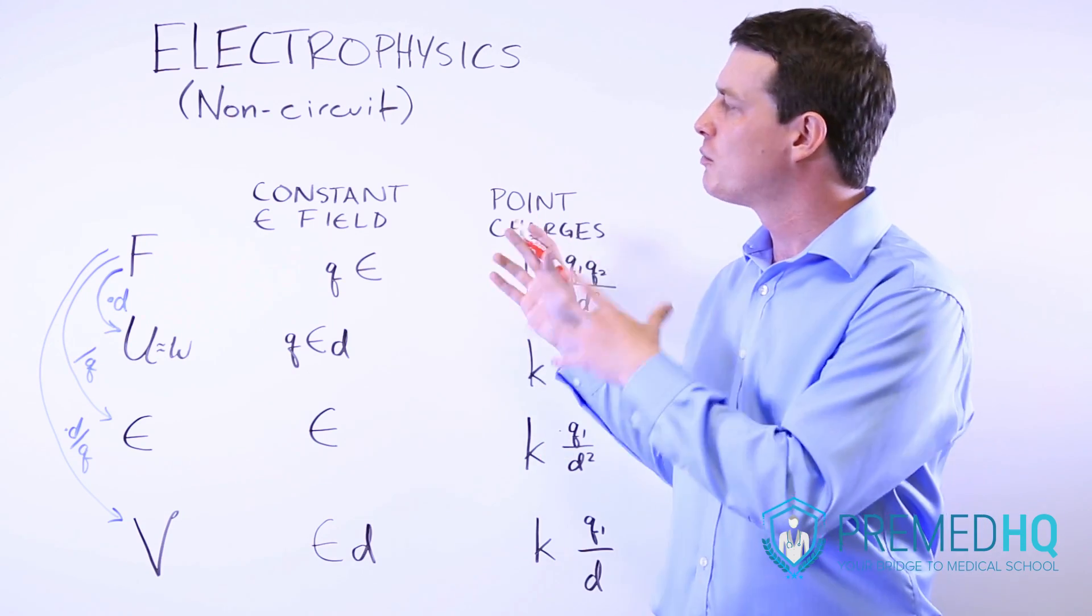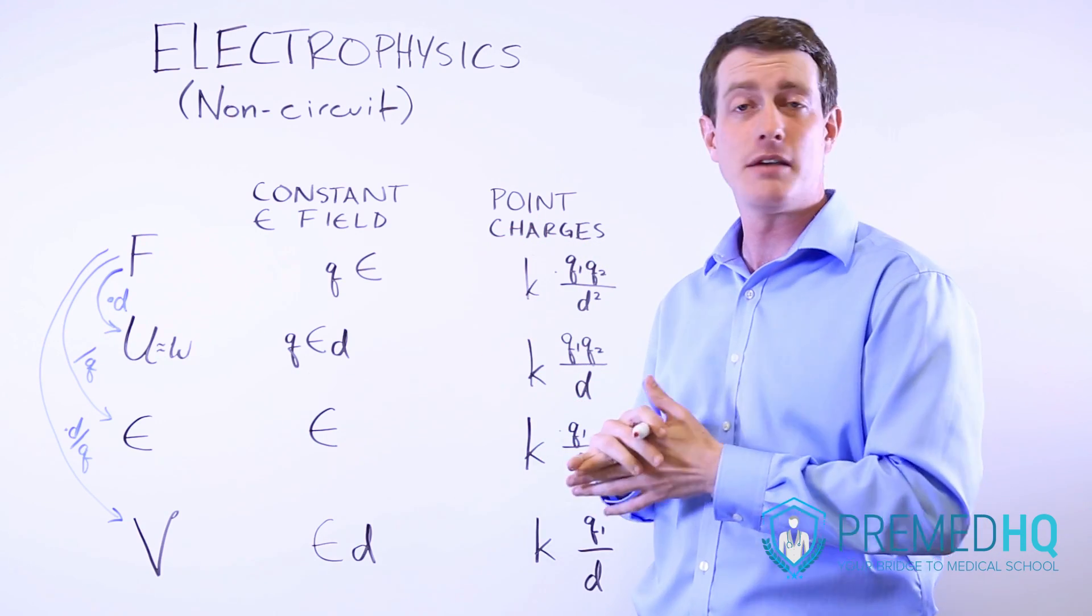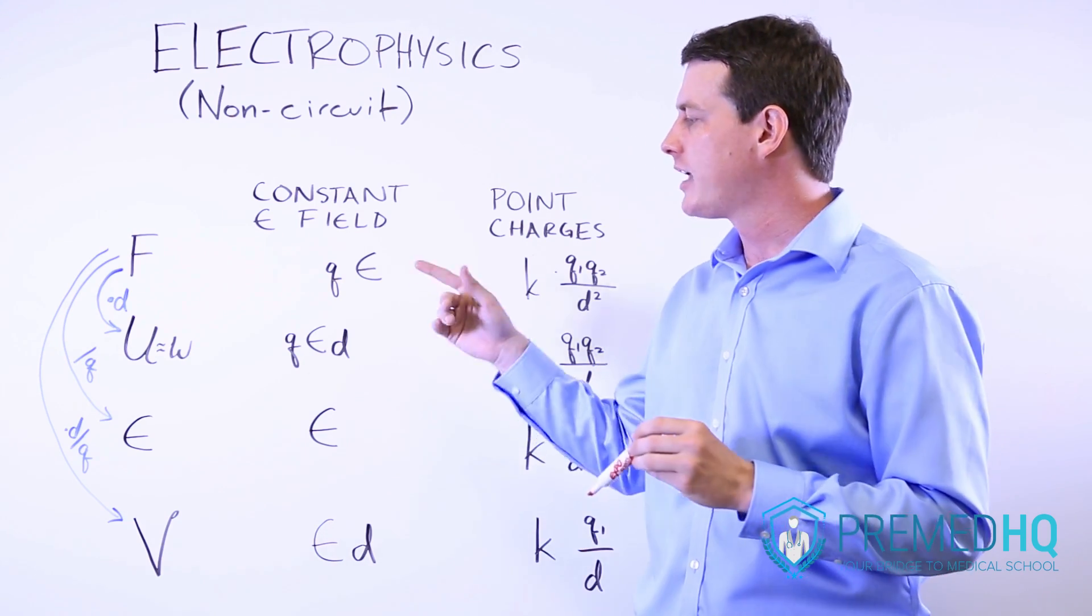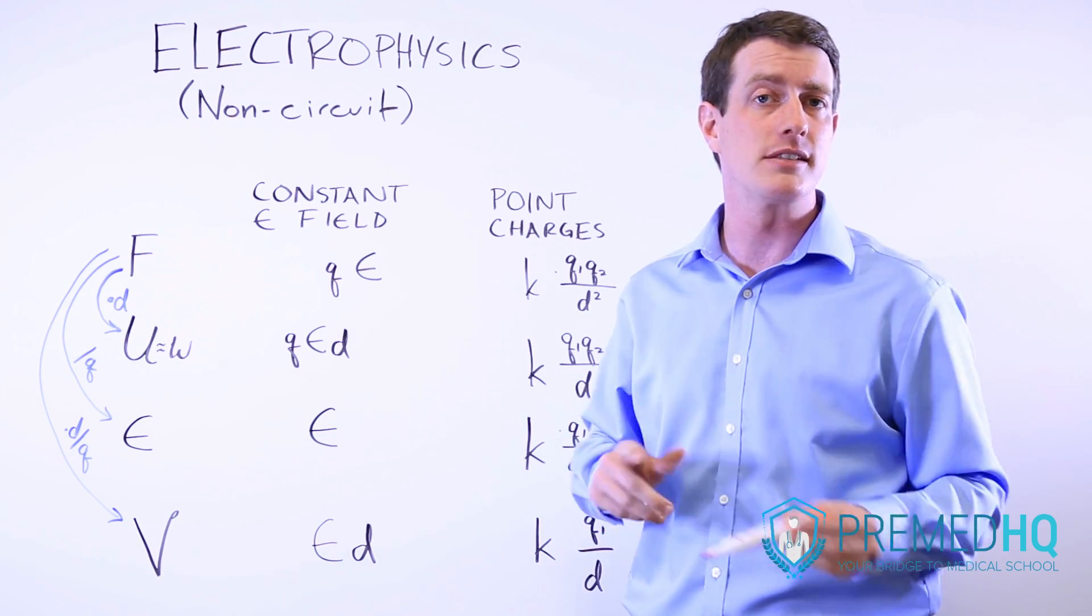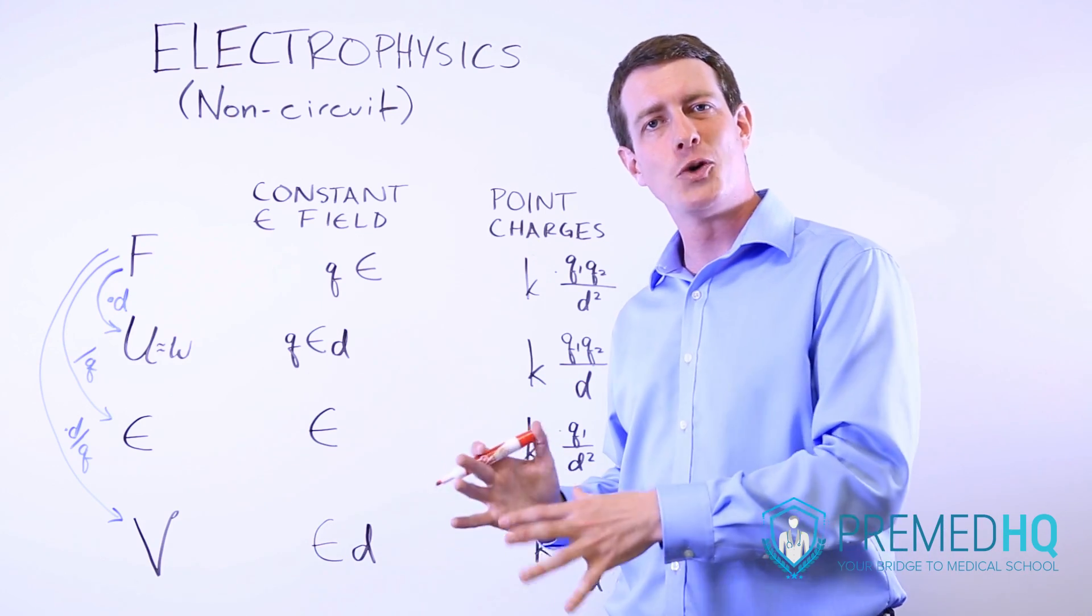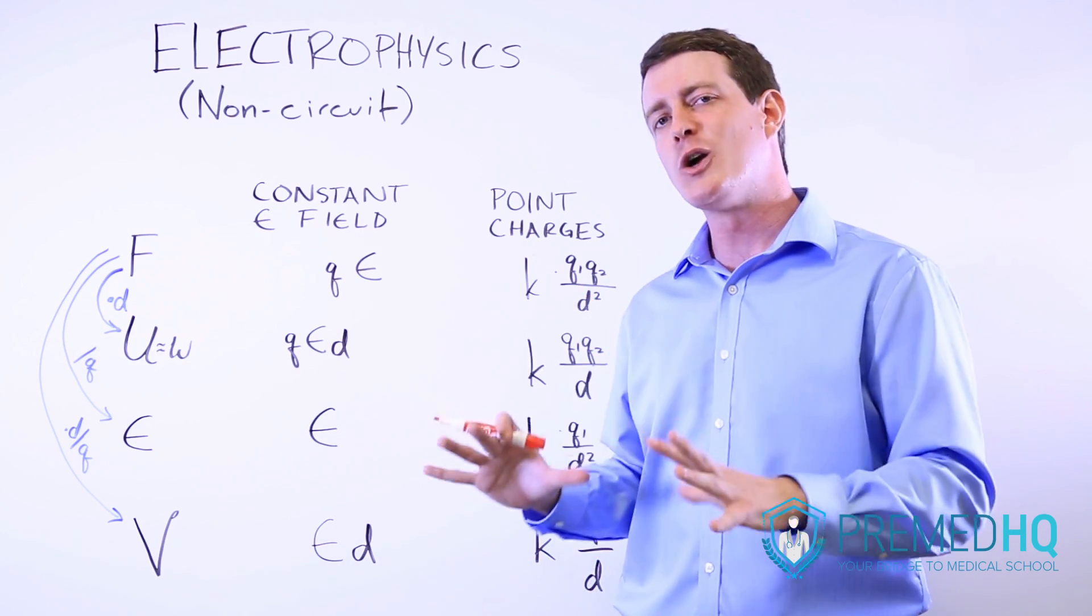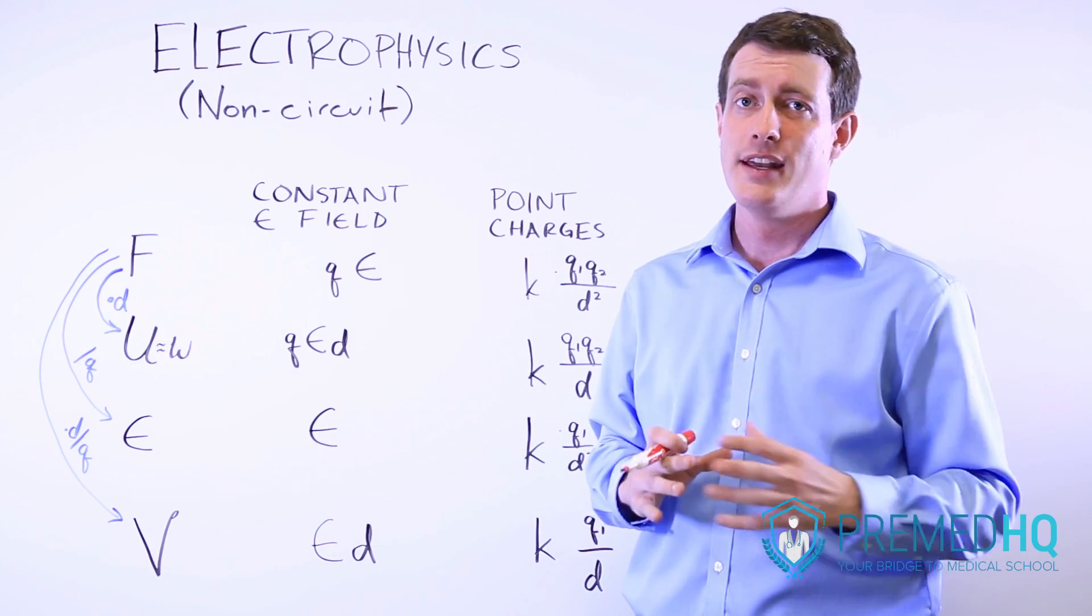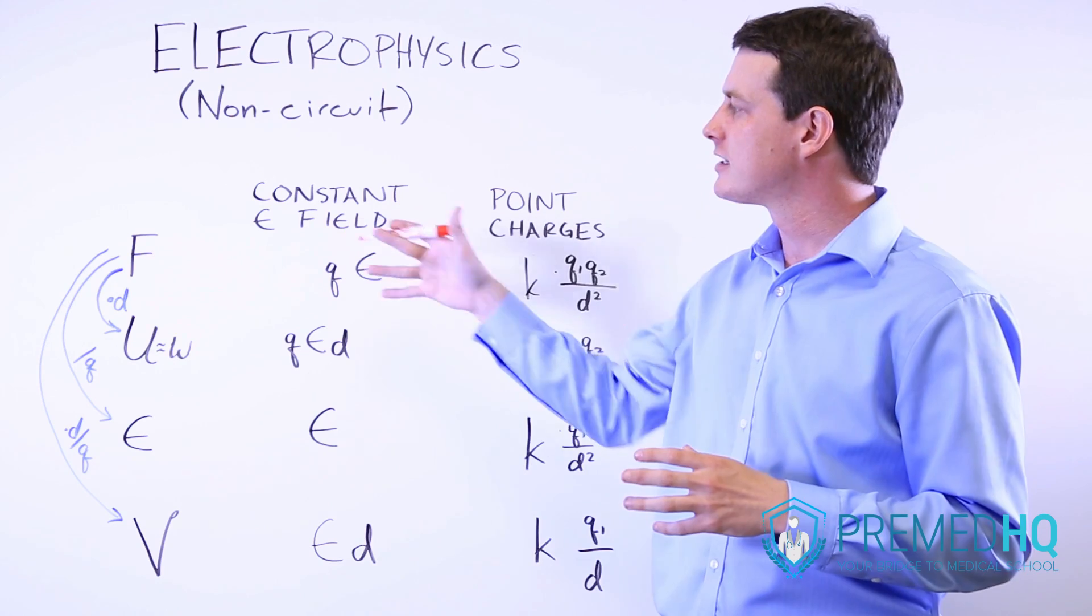The code words for constant electrical field: they might just say a constant electrical field, or they might just give you capital E and tell you what that means. Or they might say a massively large charged object, or they might have something that has such a large charge that the other things aren't particularly relevant with it. Those are code words for constant electrical field.